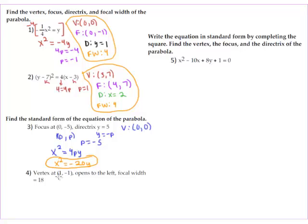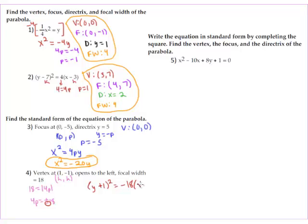For number four, they gave us our vertex — so that's h and k — and said it opens to the left, which means we're in the right-hand column for parabolas with vertex h comma k. The focal width is eighteen, and since focal width equals the absolute value of four p, four p can be positive or negative eighteen. Because it opens left, we use the negative: four p equals negative eighteen. Our formula gives y minus k, which is y plus one squared, equals four p, which is negative eighteen, times x minus h, so x minus one. That's our equation.